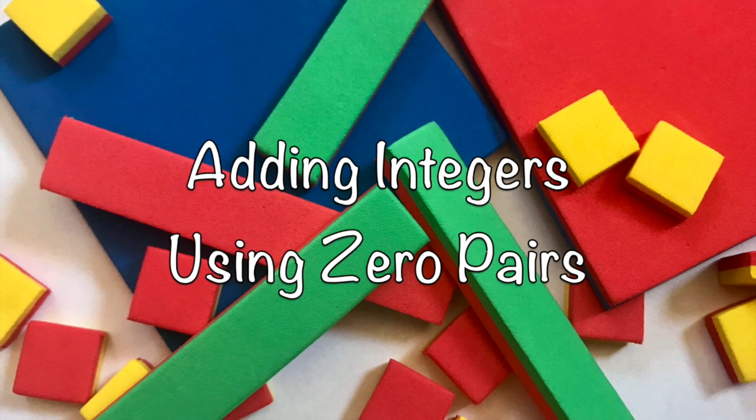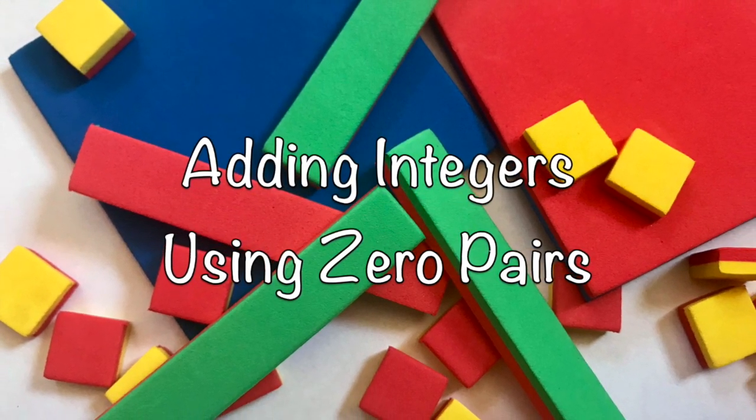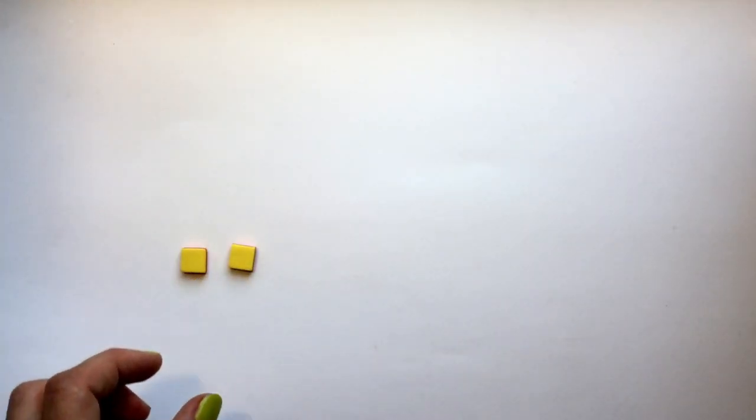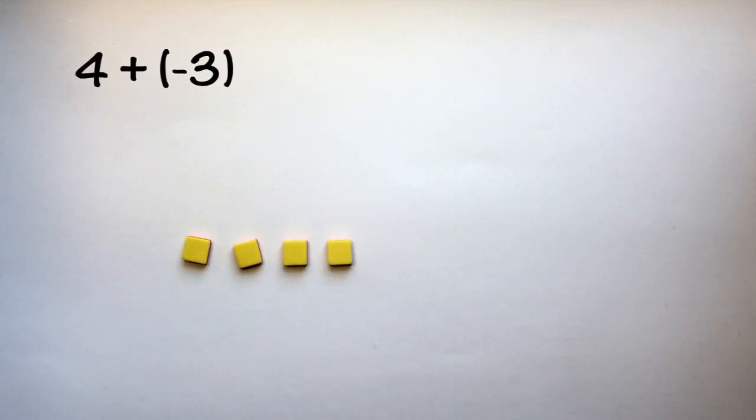Now let's use the concept of zero pairs to help with some more difficult integer addition. Let's look at the problem positive 4 plus negative 3.